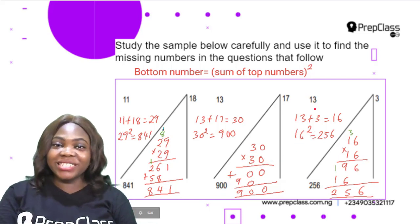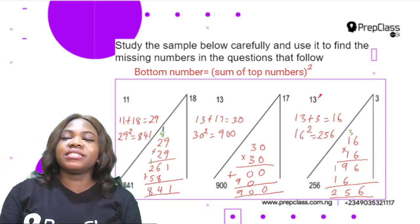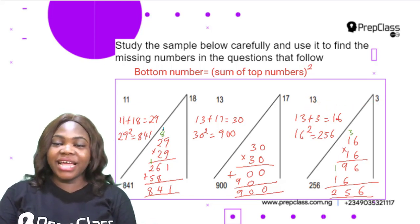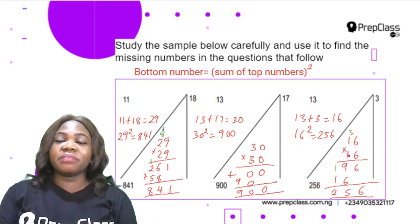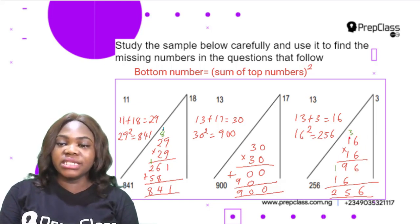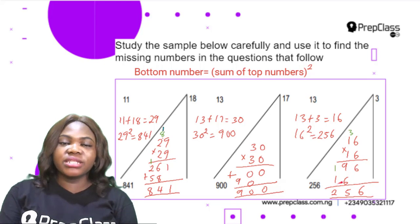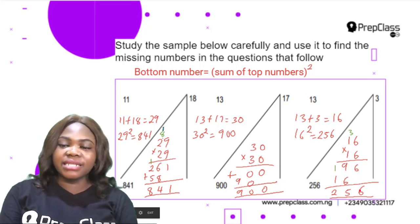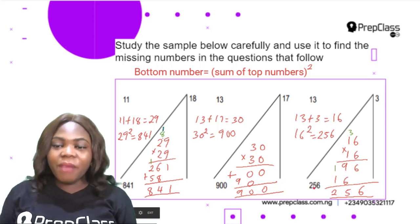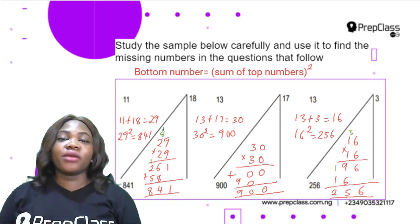Now the third sample. The top numbers are 13 and 3; 13 plus 3 is 16. We do 16 squared, that is 16 multiplied by 16. Working through: 16 × 16 = 256. The bottom number is 256 — we got it right. This means we can go ahead and answer the questions.